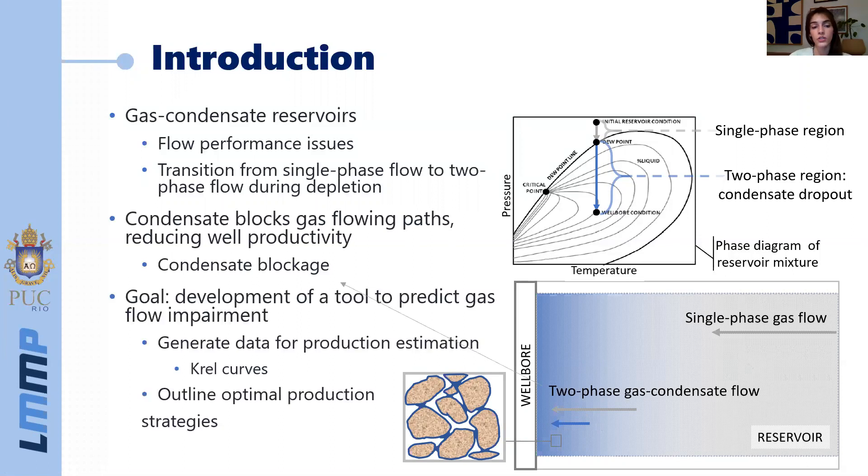So in this context, our goal is to develop a tool to predict this gas flow impairment so that we can generate data for production estimation like relative permeability curves and also help outline optimal production strategies.